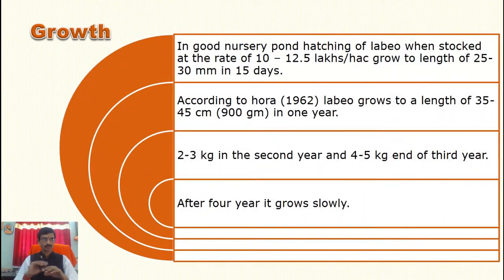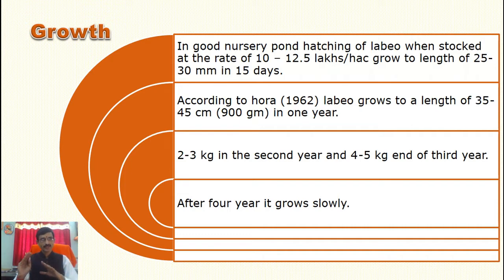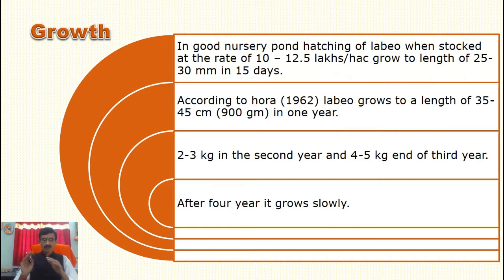Regarding growth: in a good nursery pond, hatchlings of Labeo stocked at 10 to 12.5 lakhs per hectare reach 30 mm in 15 days. According to the scientist Borah (1962), Labeo grows to 35 to 45 cm in 1 year, weighing about 900 grams. By the end of the 2nd year it reaches 2 to 3 kg, and 4 to 5 kg by the end of the 3rd year. After the completion of 4 years, Labeo grows slowly.